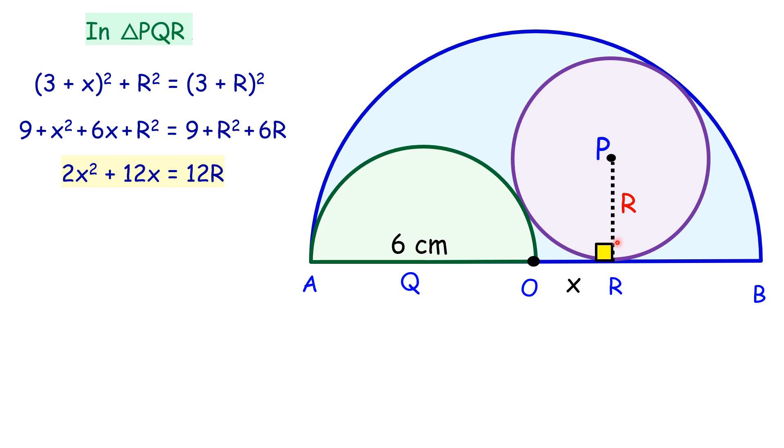For this, we will join OP and extend it further. When two circles are touching internally or externally, the point of contact and their centers are in a straight line. This particular length will be nothing but capital R. This is the radius of the blue circle, which is 6 cm.